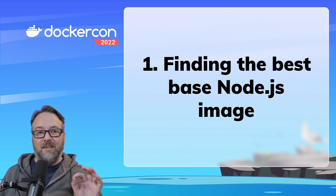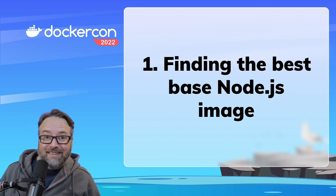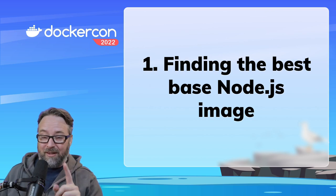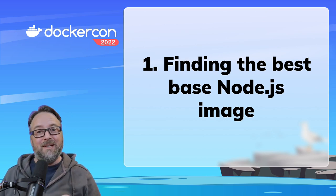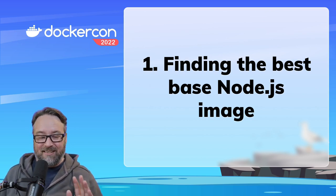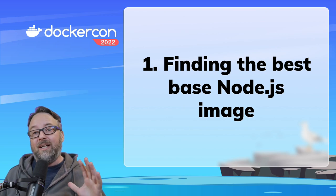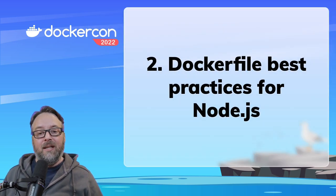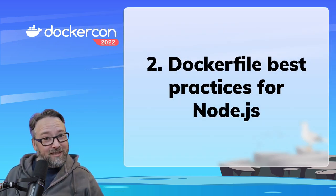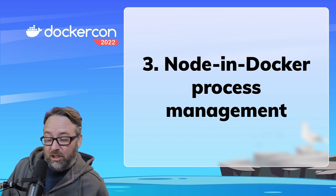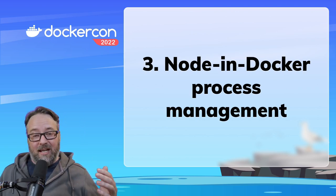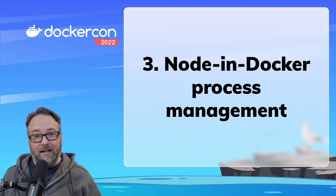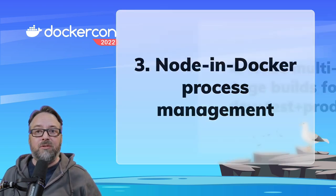Turns out finding the best, securest, smallest, and supported-by-the-Node-team image is quite complicated — it actually isn't as easy as we all think it is. So I want to give you some of the details so you can make a better choice. Then we're going to go into Dockerfile best practices. Node shouldn't be used as a PID1 inside of its container, so we're going to talk about that and what that really means and what you should use.